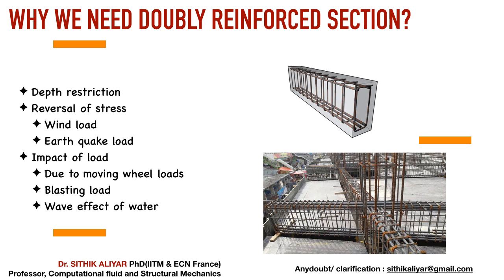Let us start the theory behind why we need to go for a doubly reinforced section. Whenever there is a depth restriction problem — consider a moment acting in the building of 200 or 250 kNm — one example showed that 200 kNm requires approximately 800 mm depth. When the bending moment goes very high due to heavy wind loads, lateral loads, blasting loads, wave effects in offshore or coastal structures, bridge moving wheel loads, or heavy piling structures, you can expect bending moments of 400, 500, even 900 kNm.